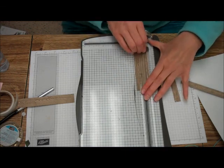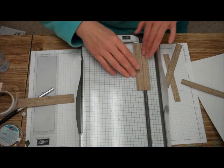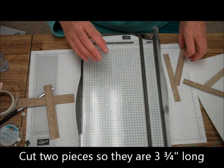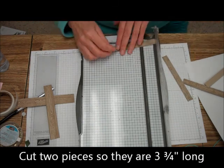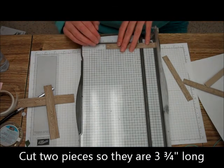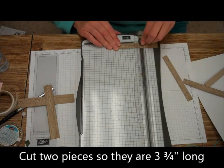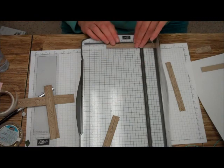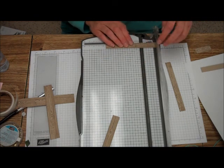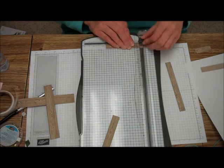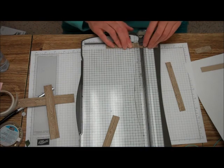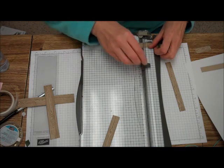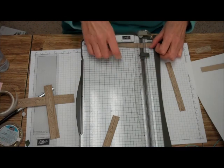And then what you want to do is cut two pieces three and three quarters. So you're going to cut down two of these pieces three and three quarters. So I've got one and I've got two. There.